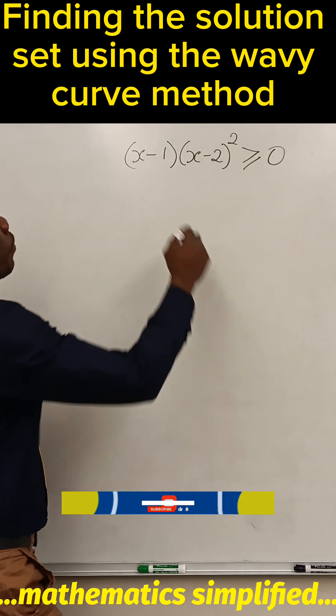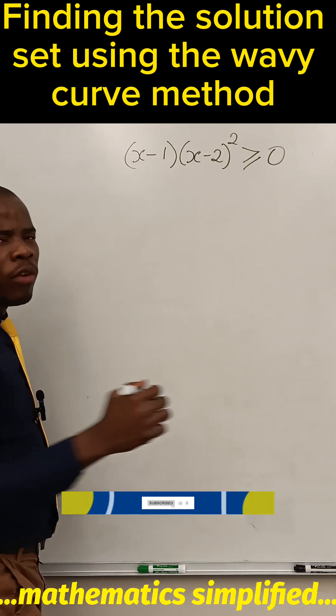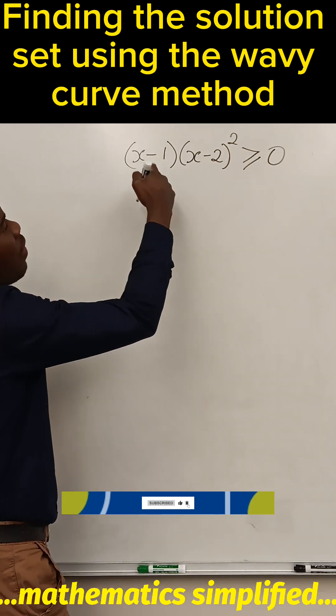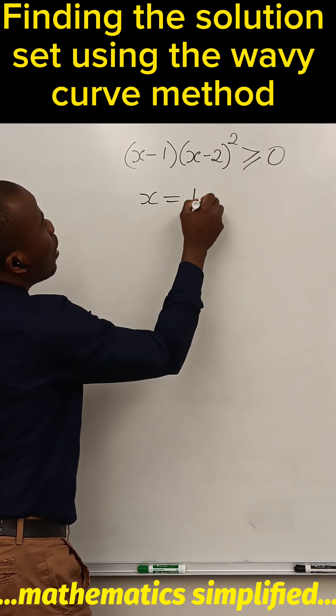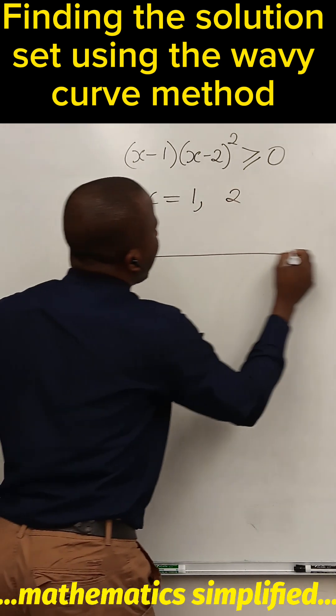First of all, look for the critical point. The critical points are the values where these are equal to zero. So the critical points are 1 and 2. Draw the number line.